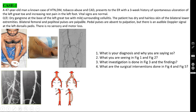The patient has dry and hairless skin of both lower limbs. Bilateral femoral and popliteal pulses are palpable, but pedal pulses are absent to palpation. There is an audible Doppler signal at the left dorsal pedis. There is no sensory or motor loss — sensory and motor loss will happen only in acute limb ischemia. This is also chronic limb ischemia, but because the patient has already developed dry gangrene and rest pain, this is a case of critical limb ischemia, not lifestyle-limiting ischemia.